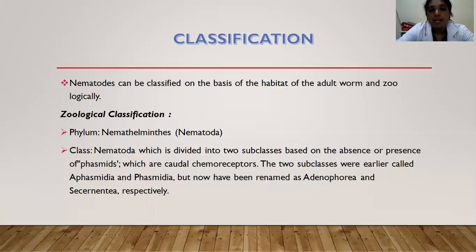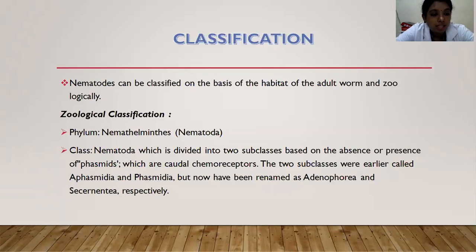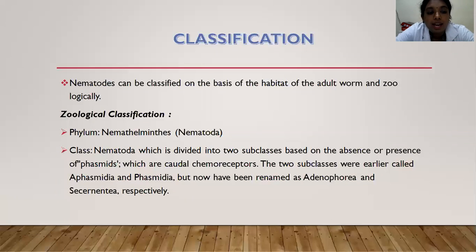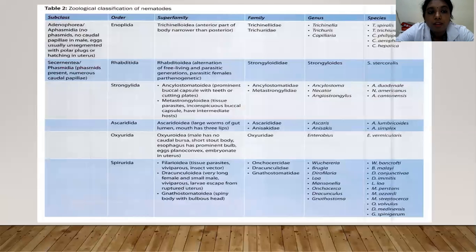Classification of nematodes can be done on the basis of the habitat of the adult worm, or zoologically. For zoological classification, there is the phylum Nemathelminthes or Nematoda, which is divided into two subclasses based on the absence or presence of phasmids — caudal chemoreceptors. These two subclasses were earlier called Phasmidia and Aphasmidia, but have now been renamed Adenophorea and Secernentia respectively.